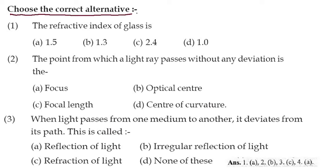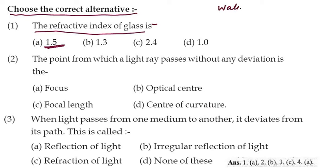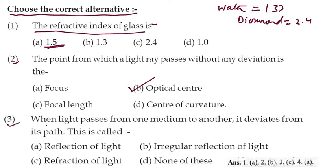Now choose the correct answer. First — the refractive index of glass is 1.5, not 1.33. The refractive index of water is 1.33 and that of diamond is 2.4. Number two — the point from which a light ray passes without any deviation is the optical center. Number three — when light passes from one medium to another medium and deviates from its path, it is called refraction of light. The answer is option C, refraction of light.